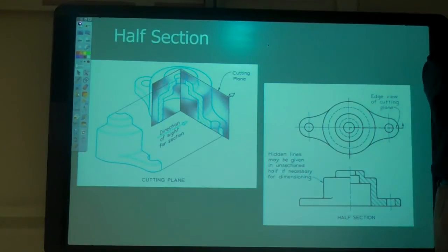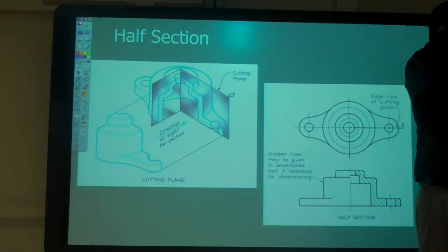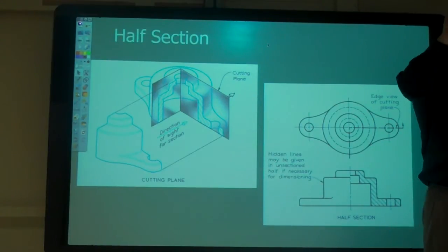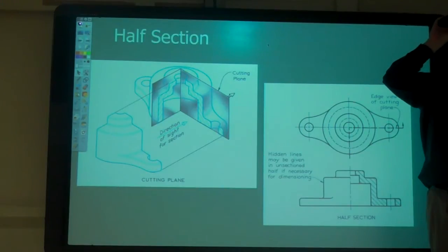Just like this one, I can see the outside. Now I have a half section. Just half the view is a section, half is still the outside. So why would we want to do this instead of just a full section?